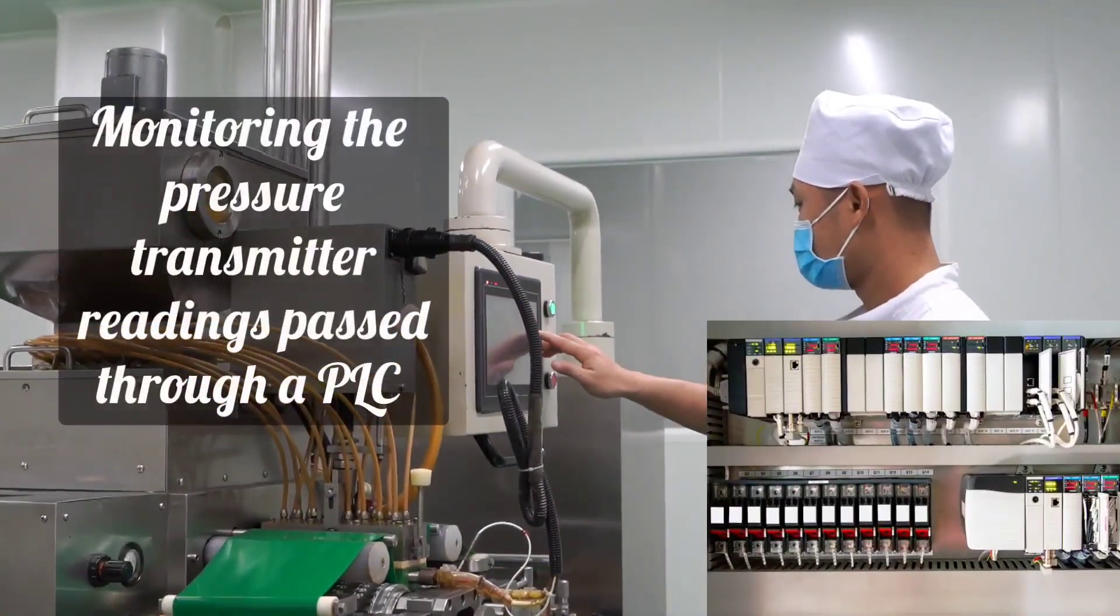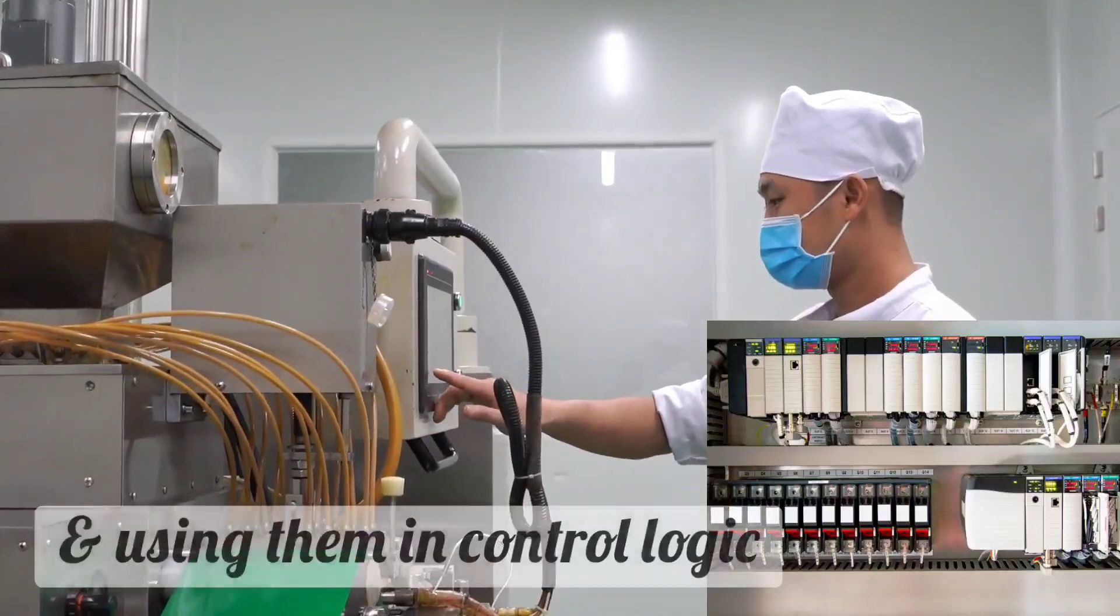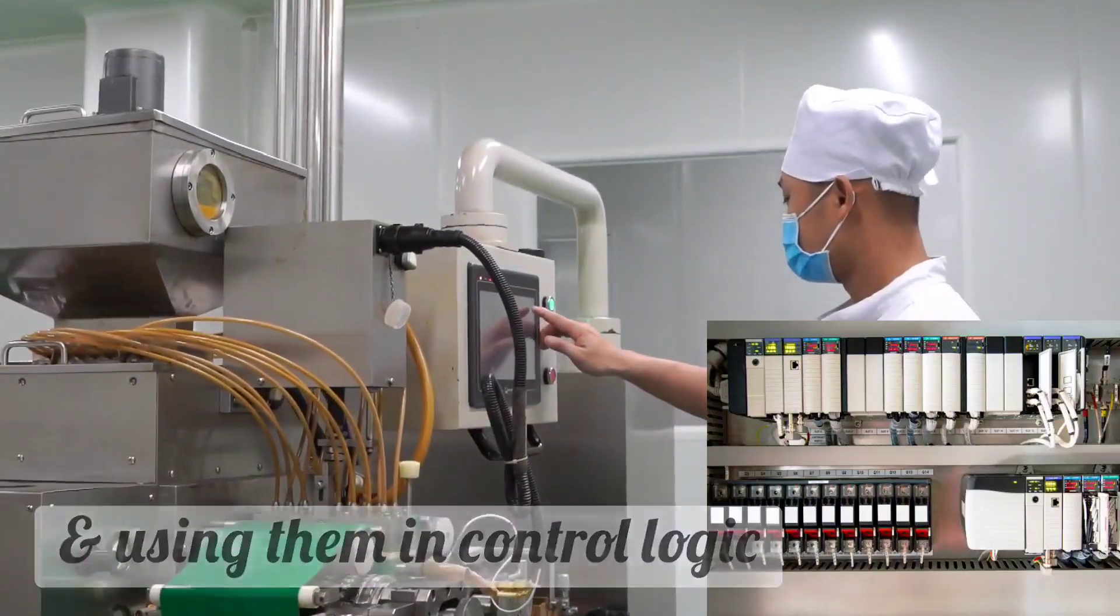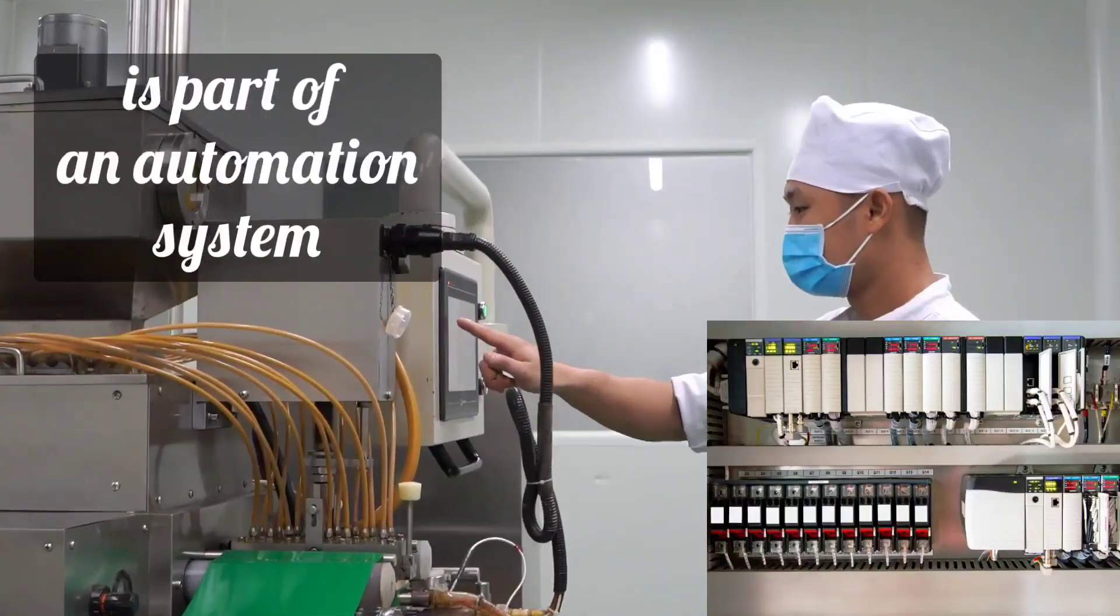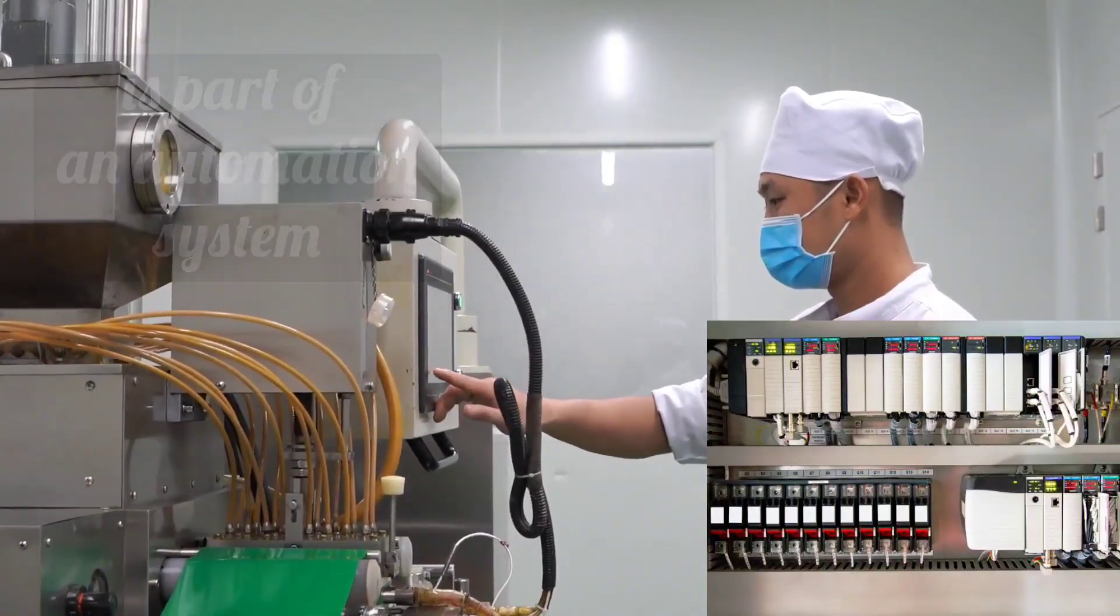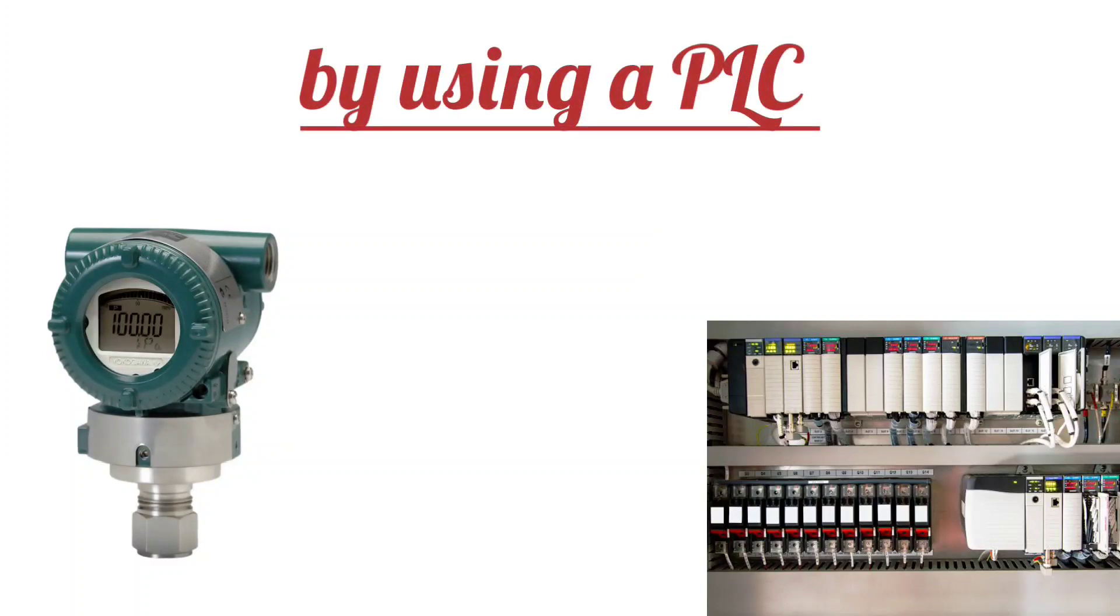Next step is monitoring or control. The pressure readings read through the PLC will be monitored and used in control logic. Monitoring the pressure transmitter readings passed through a PLC and using them in control logic is part of an automation system.